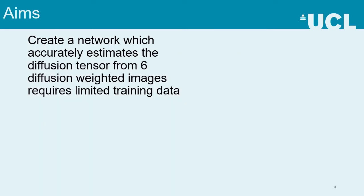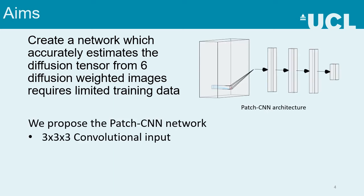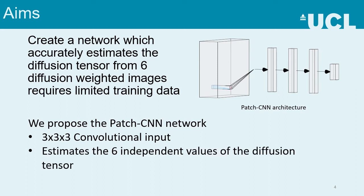In this work we present a method which estimates both the scalar microstructural tissue measures and directional properties of the diffusion tensor with high accuracy whilst requiring only one training subject. To achieve this, we propose PatchCNN, which is an adaptation of the voxel-wise networks by expanding the input window to be a 3x3x3 kernel. This allows the network to leverage local information to improve estimation. The input window is chosen to be minimal such that training data requirements also remain minimal. The network supports scalar and directional estimation by estimating the six independent values of the diffusion tensor.